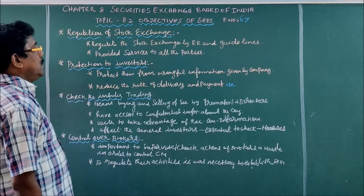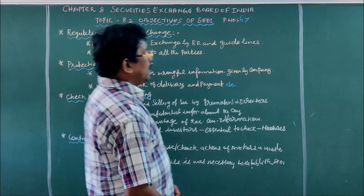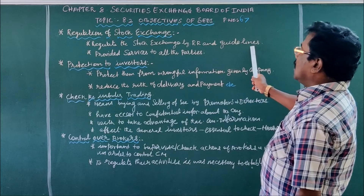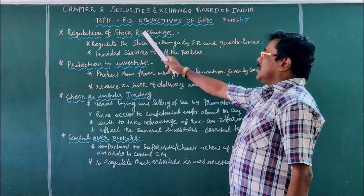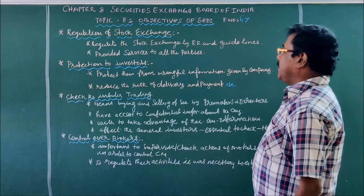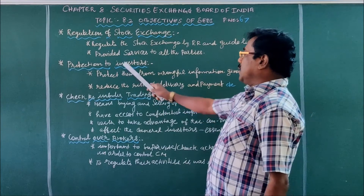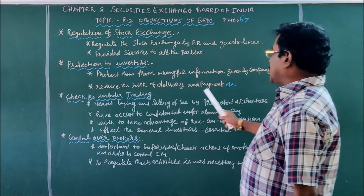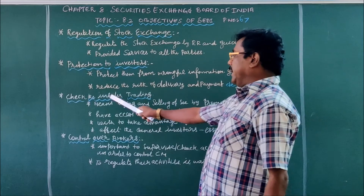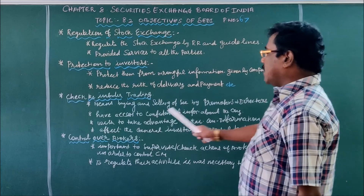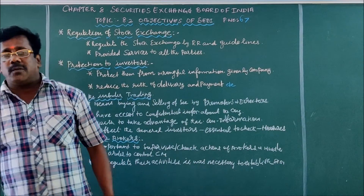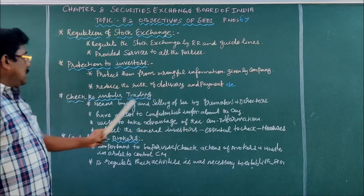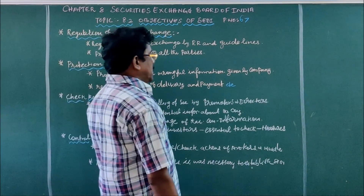To summarize, the four important objectives of the Securities and Exchange Board of India are: first, Regulation of Stock Exchange by implementing rules, regulations, and guidelines so that services provided by the stock exchange are meaningful; second, Protection to Investors from harmful information and to reduce risk in delivery and payment; third, Check Insider Trading — buying and selling of securities by promoters and directors using confidential information must be checked with effective measures.